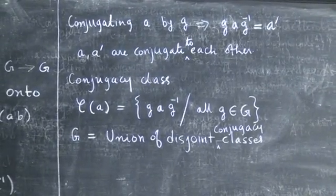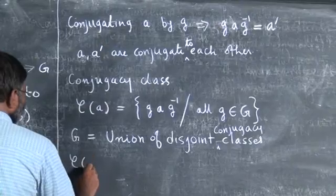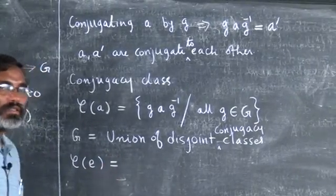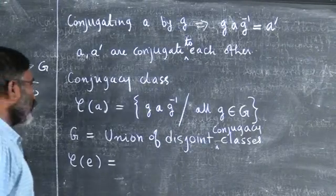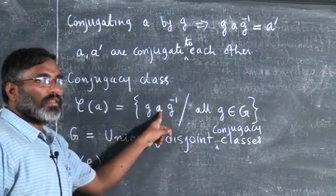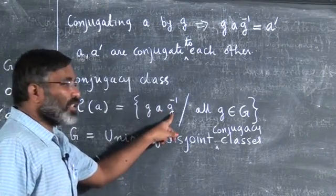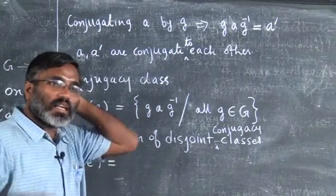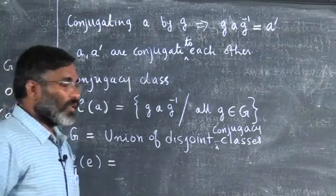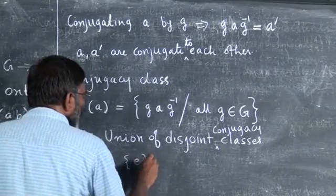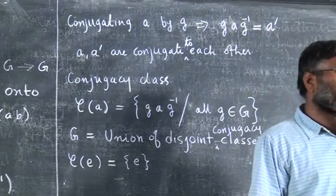How many elements will be there in the class of the identity? If I take the class of identity, I must put the identity in g·e·g⁻¹, which always gives only the identity — whatever g is. So by this conjugation operation I cannot produce anything other than the identity. The conjugacy class of the identity has only one element.